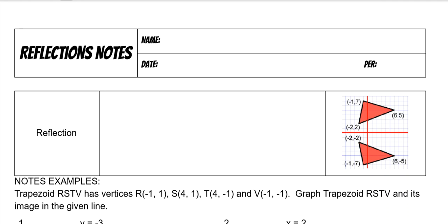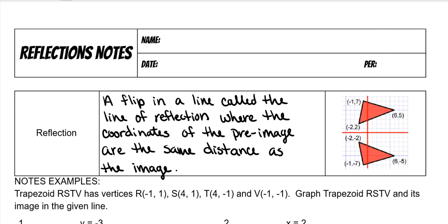Today we're going to go over reflections. A reflection is a flip in a line called the line of reflection, where the coordinates of the preimage are the exact same distance as the image. In this picture, this is the line that they are reflected over — so this is our line of reflection.